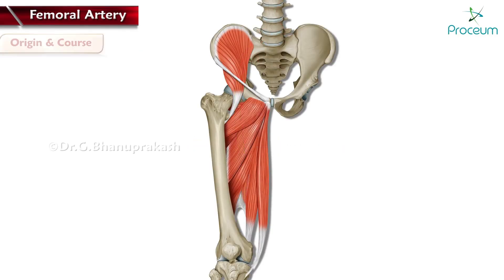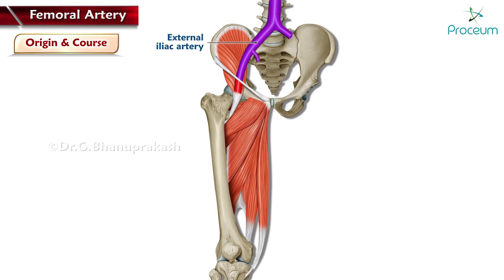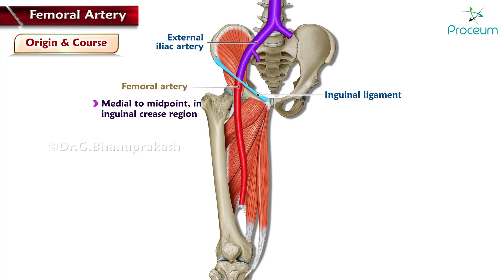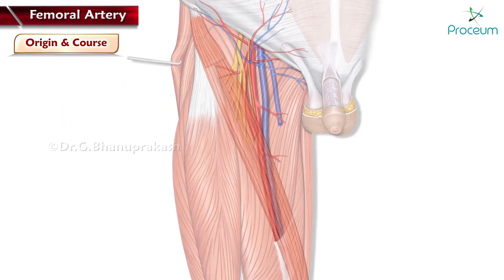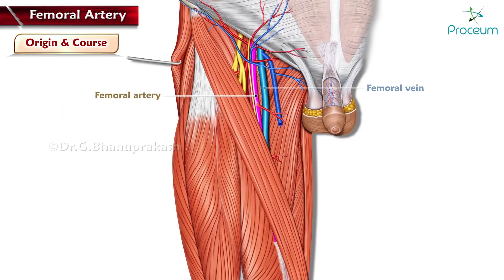The common femoral artery forms as a continuation of the external iliac artery below the level of the inguinal ligament. It is found just medial to the midpoint of the inguinal ligament in the inguinal crease region. The femoral artery provides oxygenated blood to lower extremity structures and in part to the anterior abdominal wall. The femoral artery, vein, and nerve all exist in the anterior region of the thigh known as the femoral triangle.